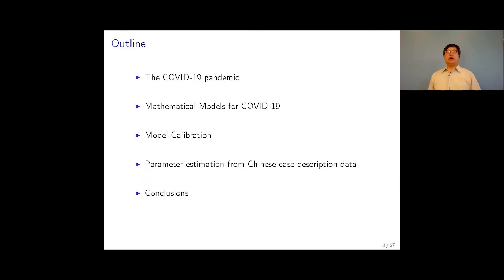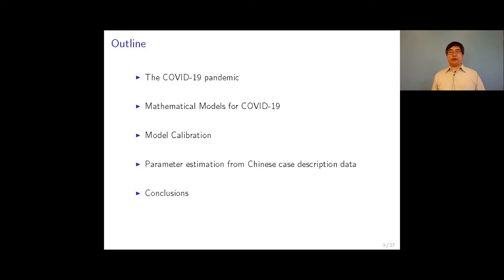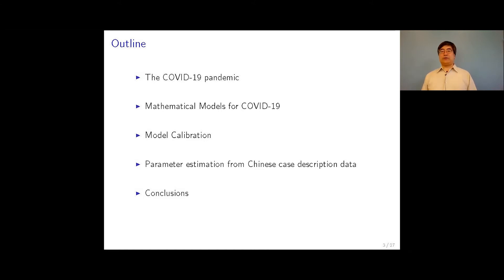We're going to first look at a few outbreaks of COVID-19 in places like BC and China, and look at how we use mathematics to describe these outbreaks and what we can get from these mathematical models. We'll look at how we calibrate our model to describe a specific outbreak, estimate parameters from other types of data, and then look at what we can conclude from this presentation.